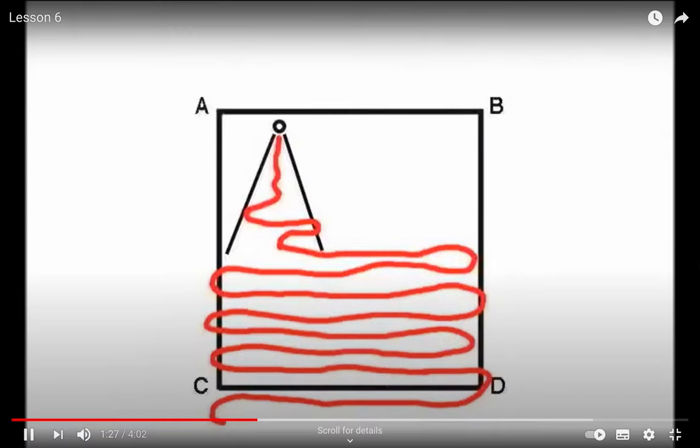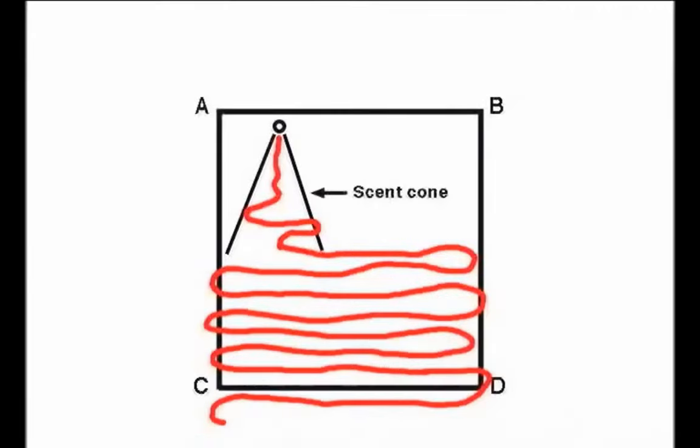This picture explains how the dog works. The term scent cone, used on the graph, means a cone-shaped distribution of scent which travels with the wind and away from the source.